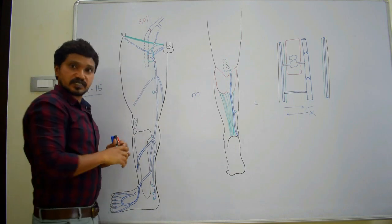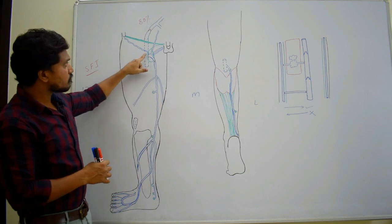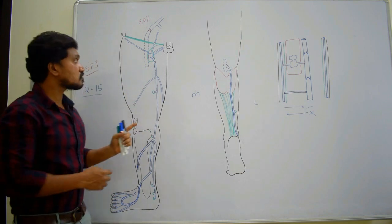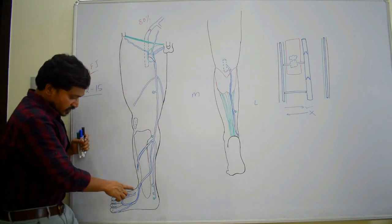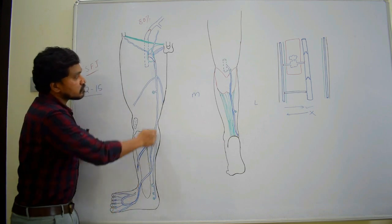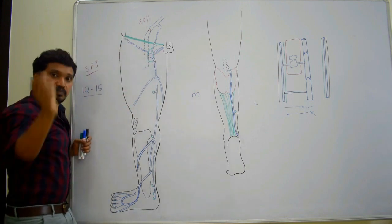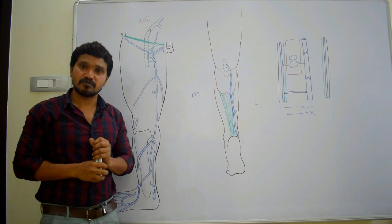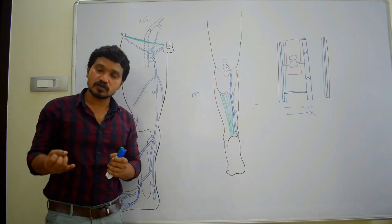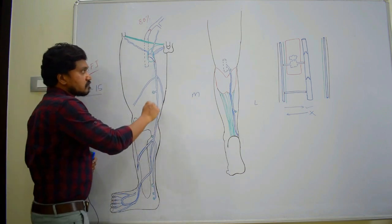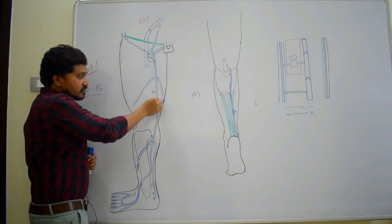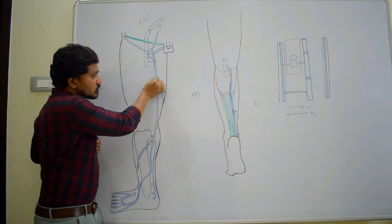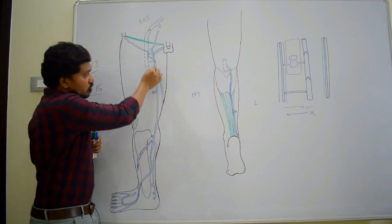There is a valve at the saphenofemoral junction. If this valve is incompetent, blood flows back from the femoral vein to the great saphenous vein, causing varicosity. Treatment includes stripping off the vein by inserting a flexible wire through an incision in front of the medial malleolus, then stripping the complete vein. Modern treatments include sclerotherapy — injecting sclerotic material to form scar within the vein — or laser surgery, where a catheter with a laser beam is introduced to close the vein without complete removal.